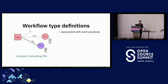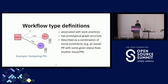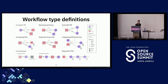Each workflow type definition is associated with a work practice—something like breaking your work up into smaller chunks to make review easier. They also have a prototypical graph structure representing a layout of issues and PRs in a certain configuration, which might have constraints on the type of nodes (issue or PR), the status of those nodes (open, closed, or merged), their authorship, or their creation timestamps. We've defined nine of these prototypical workflow type definitions, but I'll just go through a few today.